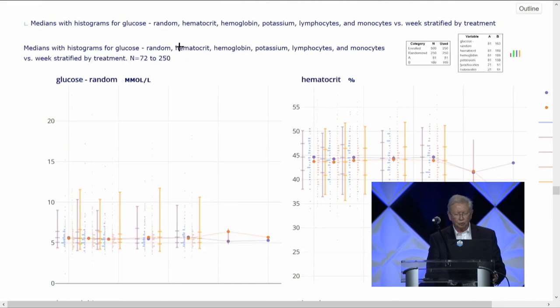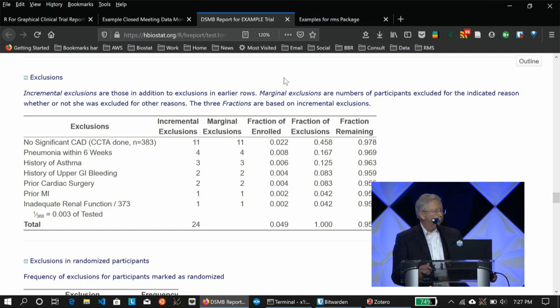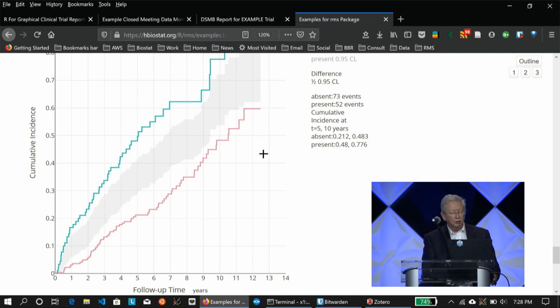This is the exclusion report. It analyzes what is causing patients to be excluded. It doesn't ask you what order to analyze those in. It finds the major exclusion, which would be here, no significant coronary artery disease. That excluded 11 subjects from the trial. Then what excluded the next largest number was pneumonia within six weeks. For each exclusion, it reports the incremental exclusions, how many new subjects are excluded because of pneumonia after you've already excluded those without CAD, and the marginal exclusions.